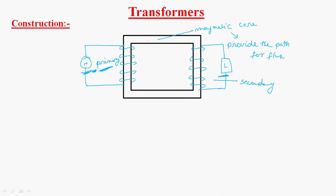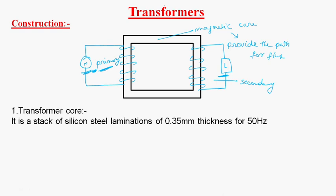The magnetic core and windings play an important role in the construction of the transformer. The transformer core is a stack of silicon steel laminations of 0.35 mm thickness.